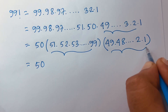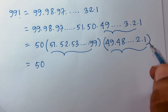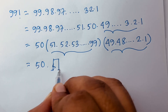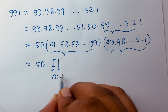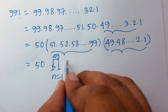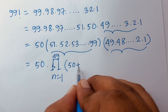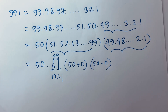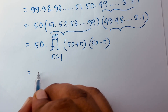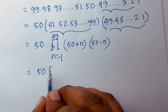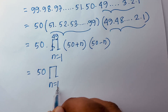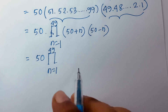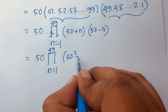We can write this as 50 times the product for n equals 1 to 49 of (50 plus n) times (50 minus n). Applying the difference of squares rule — (a plus b)(a minus b) equals a squared minus b squared — each pair becomes 50 squared minus n squared.